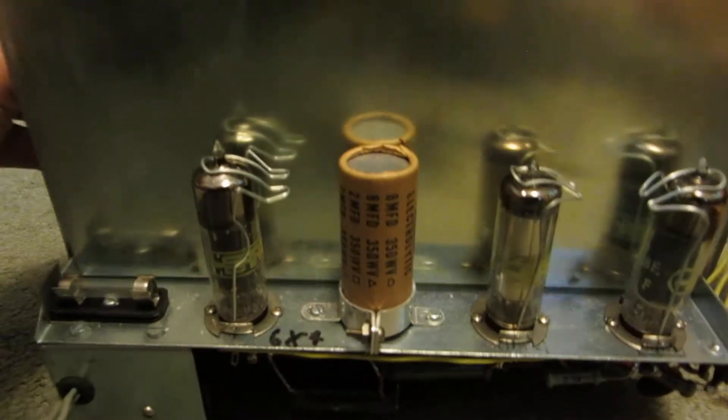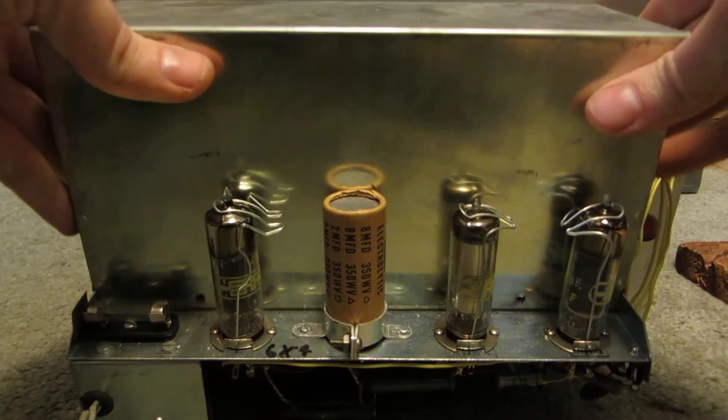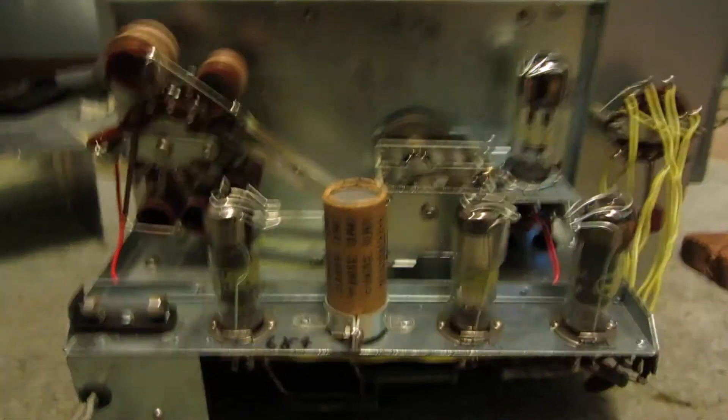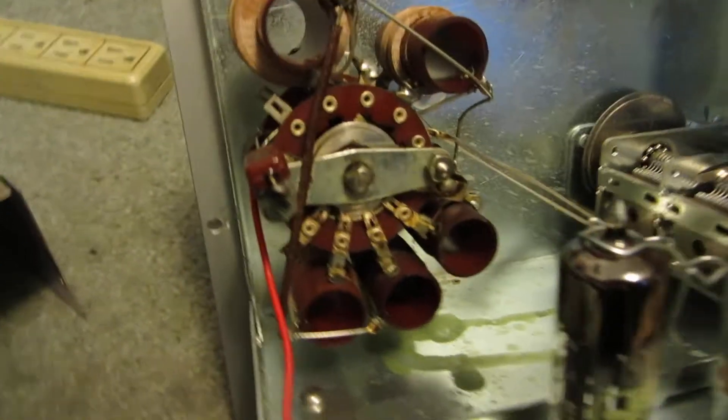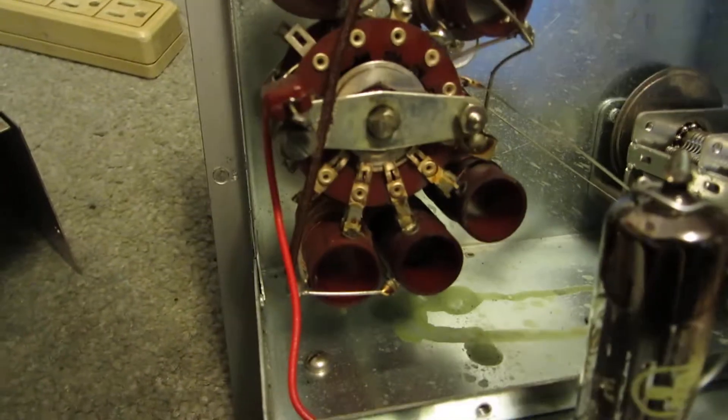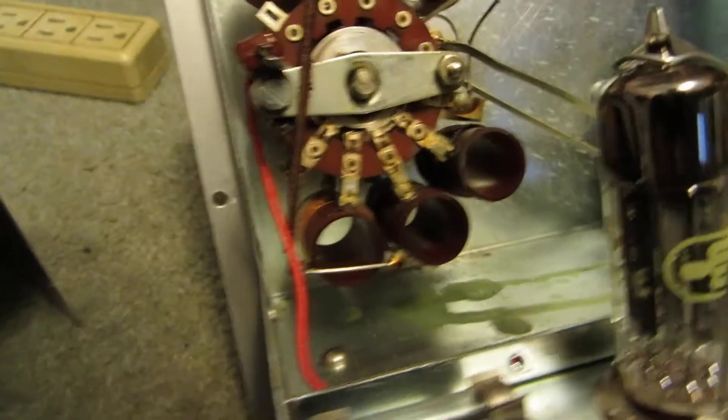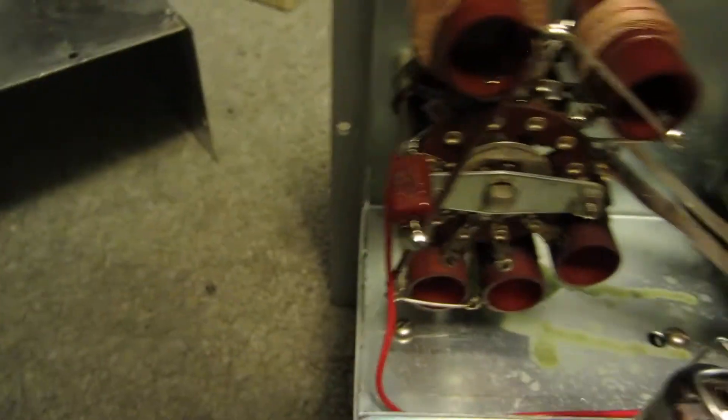I've already taken the screws out of this protective box here. And we've got another tube, we've got a 12BH7. And then we've got this thing. I have no clue. It's a switch of some sort, but why it's got these on it, I don't know. It's the frequency range switch.